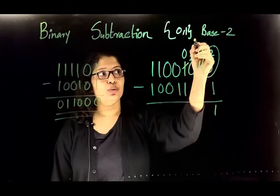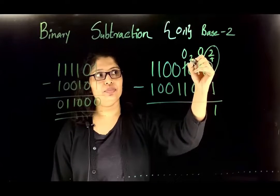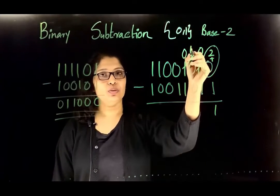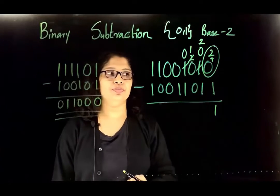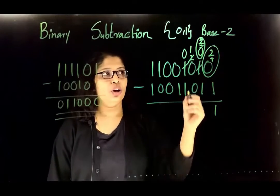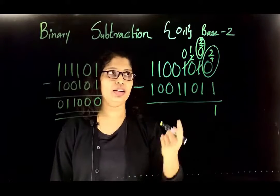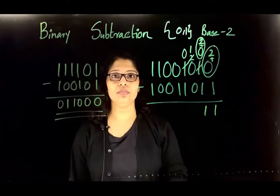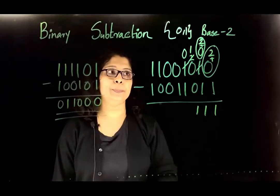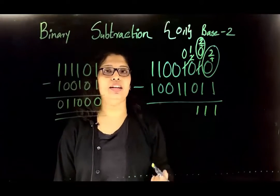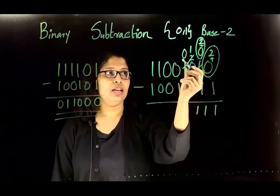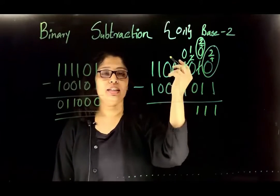While borrowing, reduce this value by 1: 1 minus 1 is 0. The borrowed value passes to the immediate next location and becomes 2. From that 2 we borrow to the next location, reducing it by 1 so it becomes 1, and the borrowed value here becomes 2. Total value available is 2 plus 0, which is 2. 2 minus 1 is 1, and the representation is 1. Next, 1 minus 0 is 1. Then 0 minus 1 again requires a borrow.